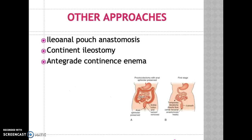An ileal pouch anastomosis is a treatment for ulcerative colitis of the colon. The colon is removed and a pouch created from the small intestine is attached to the anus for evacuation of feces. The continent ileostomy also creates a pouch from the small intestine. Antegrade continent enema is a method of giving an enema by inserting a tube into the rectum and administering a solution that helps to empty the colon.